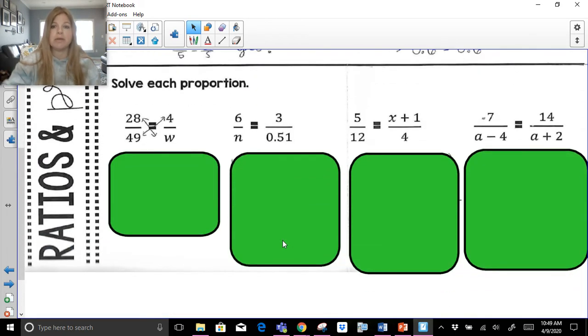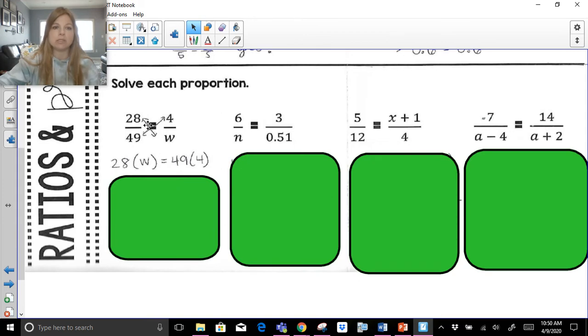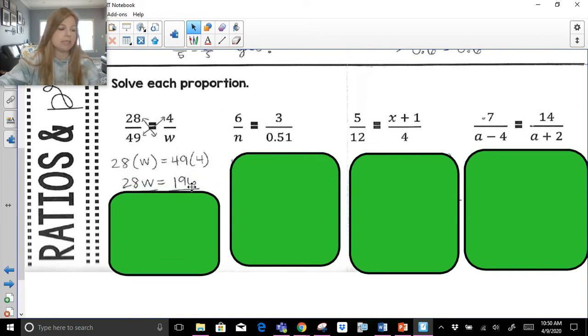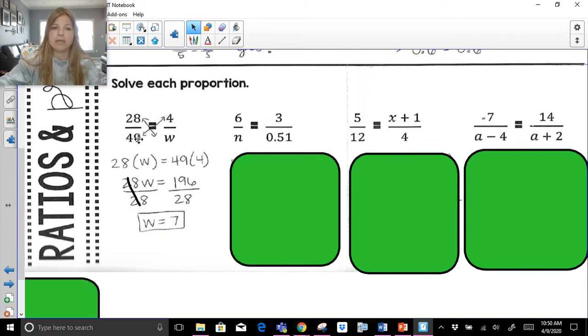All right. I have four solving proportion problems with you. They all have a little bit of a different skill, so hang tight with me. First one, 28 over 49 equals 4 over w. You can see I drew my diagonal arrows because I'm going to cross multiply. So I'm going to do 28 times w equals 49 times 4. 28 times w equals 49 times 4. 28 times w is 28w. 49 times 4 is 196. Divide both sides by 28. And 196 divided by 28 is 7. 28 over 49 is equal to 4 over 7. 28 over 49 actually simplifies to 4 7ths. If I divide these both by 7, I'm going to get 4 7ths, and so it pretty much makes sense.